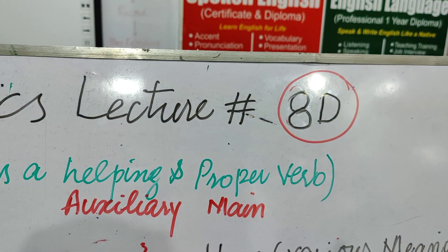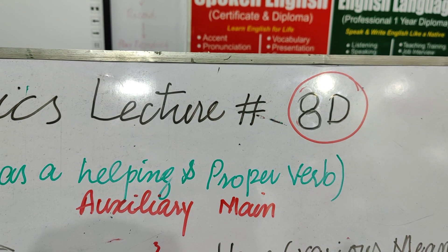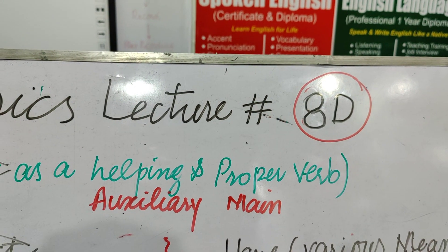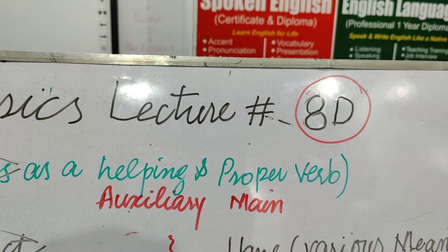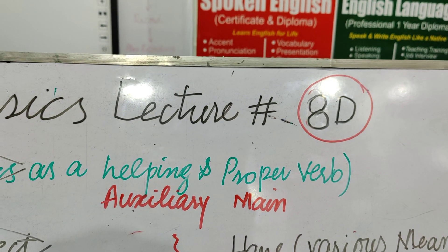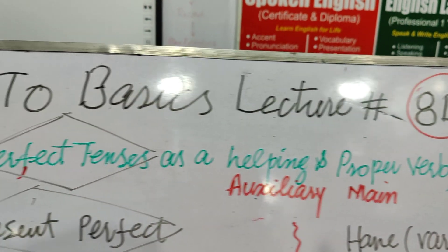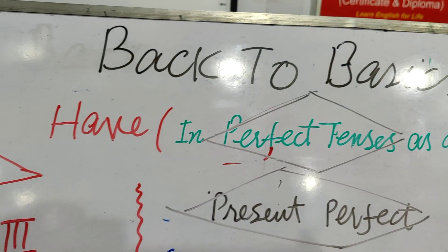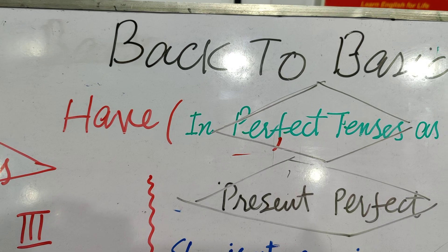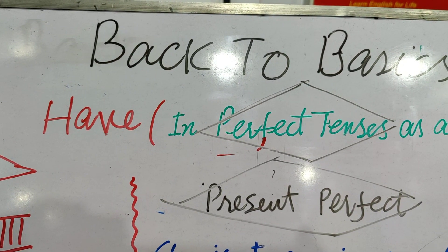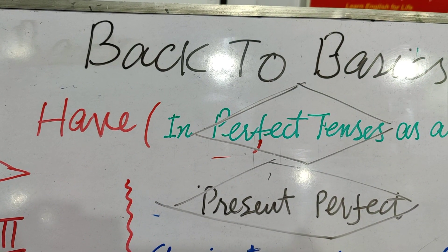It's not the case that we have 3 lectures before 8D. And 8D is most probably the last lecture of 8. And this is the key word that we have now, which is called has, have, had or will have.